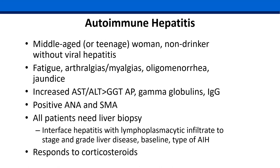Autoimmune hepatitis is part of the phase two workup, especially common in women. Commonly have elevated globulins — have a low threshold to check ANA and smooth muscle antibody. Low titer ANA and low titer smooth muscle are very common in fatty liver; over 1:640 for ANA or over 1:60 for smooth muscle are thresholds where you should be thinking about a biopsy. The liver biopsy is used very commonly and is very useful here. You don't biopsy hepatitis C or B patients unless they have fatty liver and you're trying to sort out which is which. The liver biopsy is the core of managing and working up autoimmune liver disease.